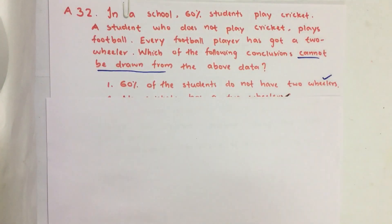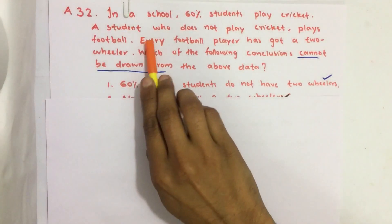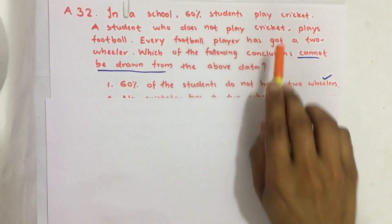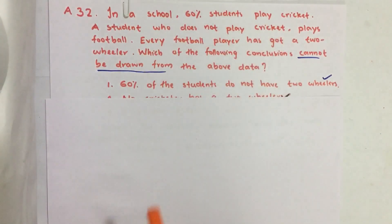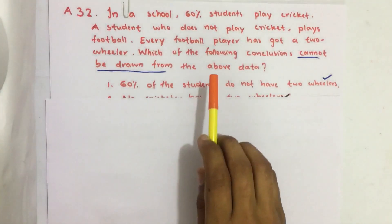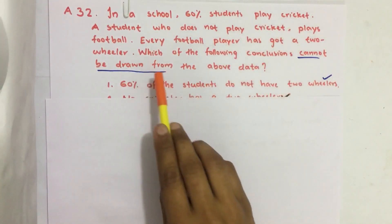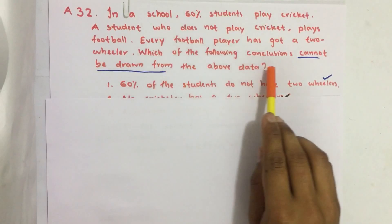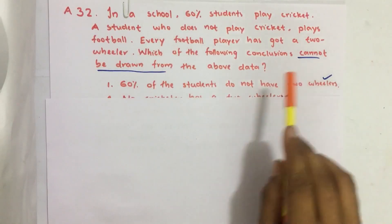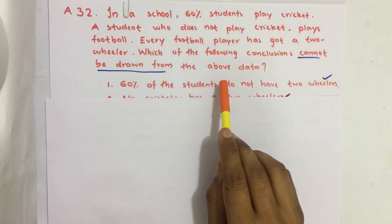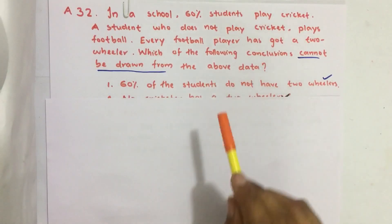In a school, 60% of students play cricket. A student who does not play cricket plays football. Every football player has got a two-wheeler. Which of the following conclusions cannot be drawn from the above data?